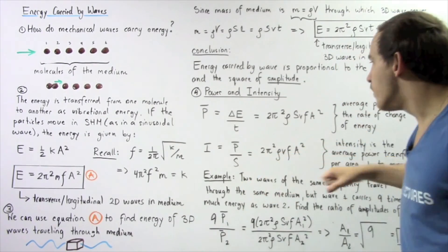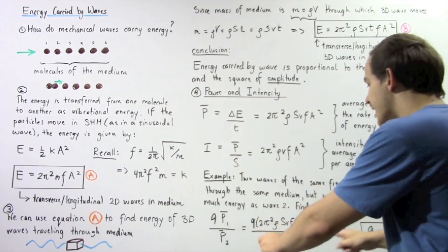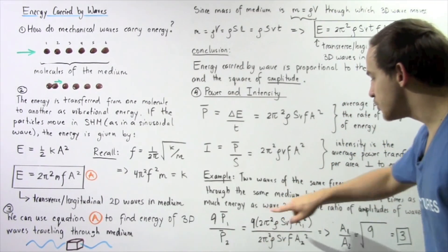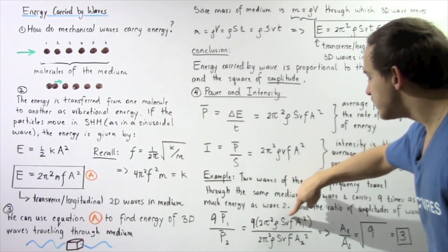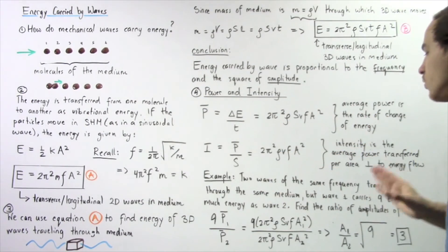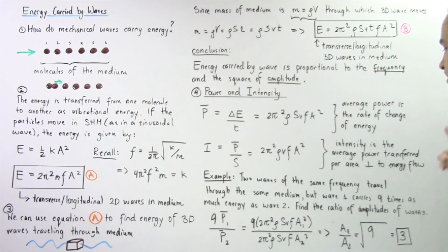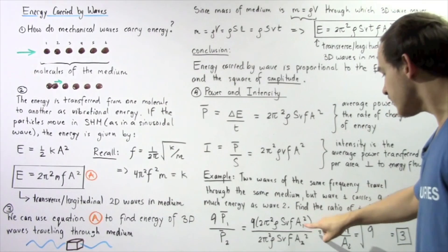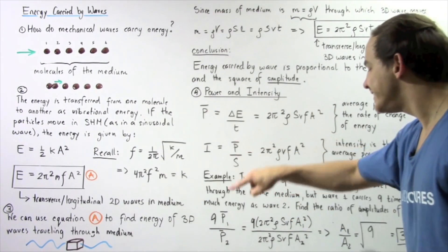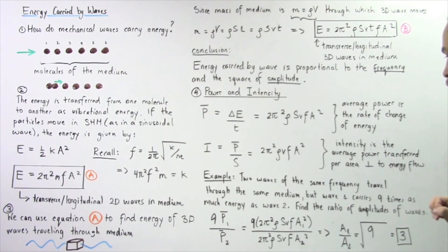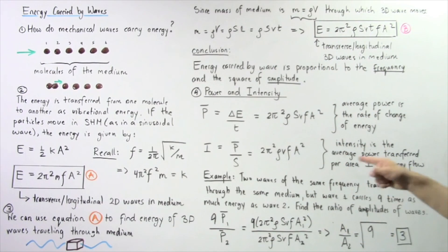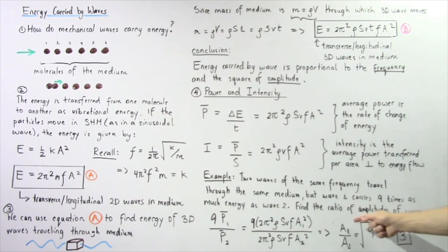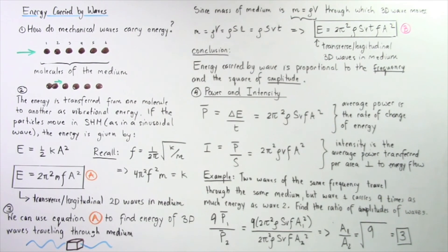We get 9 multiplied by this quantity divided by that quantity. Notice the π's cancel, the 2's cancel, the waves propagate through the same medium so densities are the same, and we assume velocity, frequency, and area are also the same since frequency is given as equal. We are left with a1² multiplied by 9 divided by a2² equals 9, and rearranging gives a1 divided by a2 equals the square root of 9.